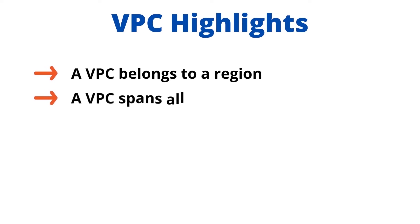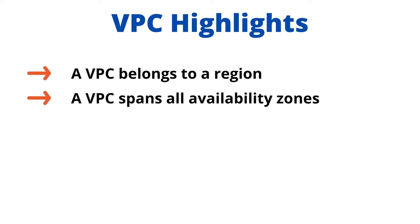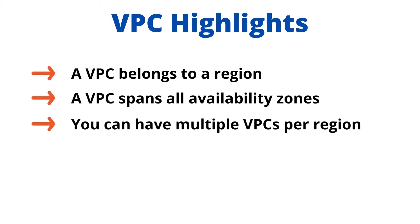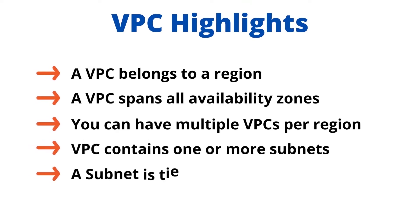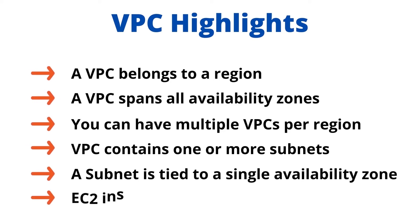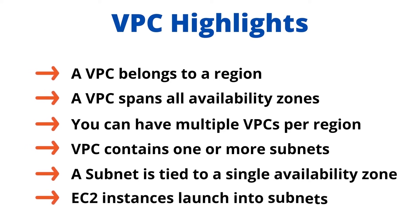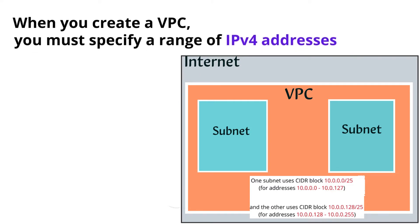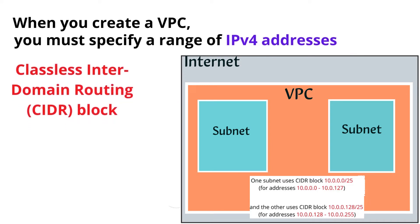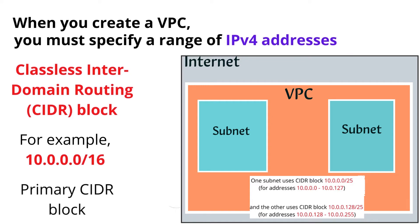A VPC spans all availability zones. You can have multiple VPCs per region. A VPC contains one or more subnets, and a subnet is tied to a single availability zone. EC2 instances launch into subnets. When you create a VPC, you must specify a range of IPv4 addresses in the form of a classless interdomain routing block — for example, 10.0.0.0/16. This is the primary CIDR block for your VPC.